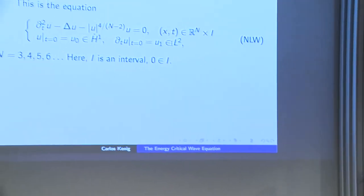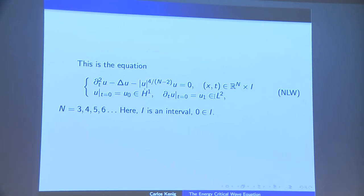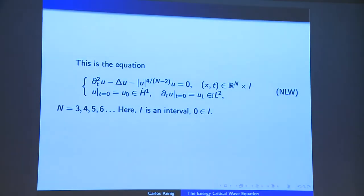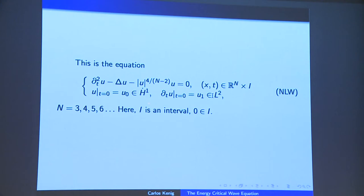Let's get more specific and describe the nonlinear energy critical wave equation. We have the usual linear wave equation, and we subtract a nonlinear term with a specific nonlinearity, asking that the initial data be in the space H-dot-1 of functions with gradient in L2, and the time derivative in L2. The dimension is 3, 4, 5, or 6; I is a time interval, and the origin belongs to this time interval.